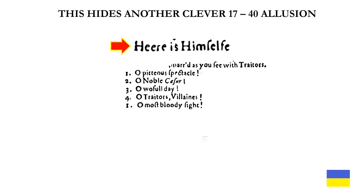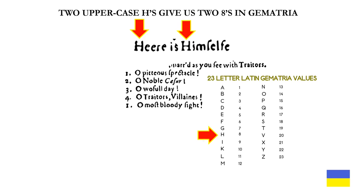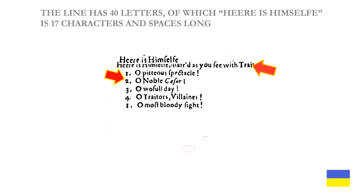This hides another clever 1740 allusion. Two uppercase H's give us two 8's in Latin alphabet gematria — 8-8, or 88 — which has the letter value of T-T-T-T in the Latin alphabet repeating count, or 4-T.